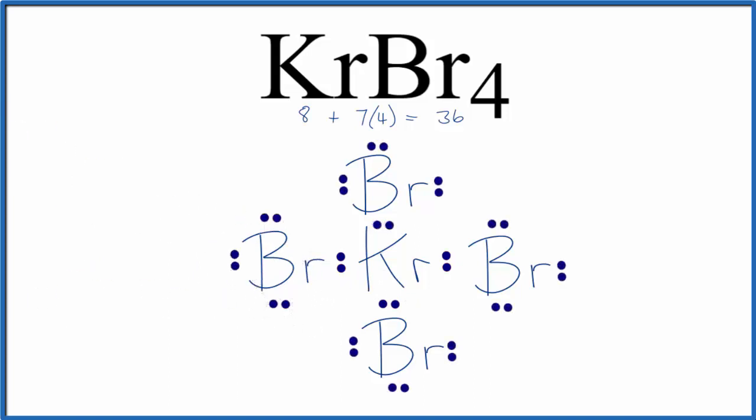So this looks like a pretty reasonable Lewis structure. We have octets for all the atoms here, but we do have a problem. We've only used 32 valence electrons, and we have a total of 36. So we have 4 additional electrons we've got to put somewhere.